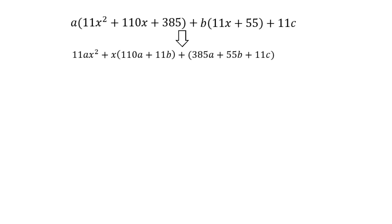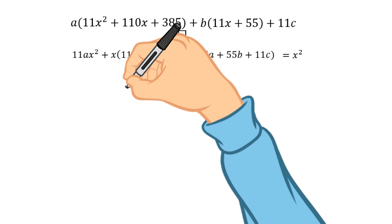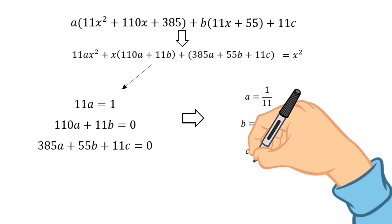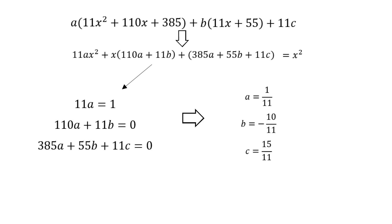Now, recall that this expression should be equal to X squared. Therefore, we can derive the equations for the coefficients in front of the powers of X. Now, we can solve this system of linear equations, ending up with the following answers. You can stop the video here and try it yourself. Finally, we use the found coefficients to write the exact formula of the polynomial.